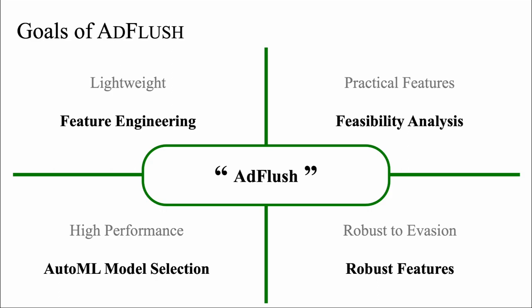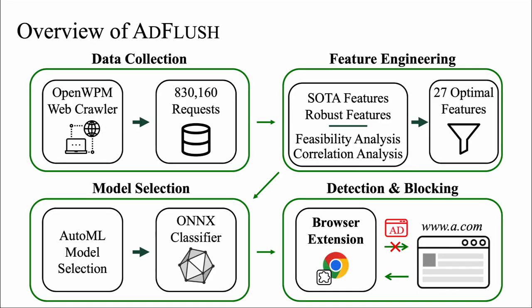To maintain high performance with fewer features, we adopted an auto-ML selection approach and included robust features to stand against evasion tactics. The overview of our solution AdFlush is as the following. We set up our dataset consisting of state-of-the-art existing features and our new robust features and filtered them to a set of 27 optimal features. We then trained our classifier with the selected features through auto-ML model selection and converted to an ONNX model to support WebAssembly backend compatibility. The final model is imported in our Chrome extension framework and successfully prevents ads and web trackers in the user's browser.